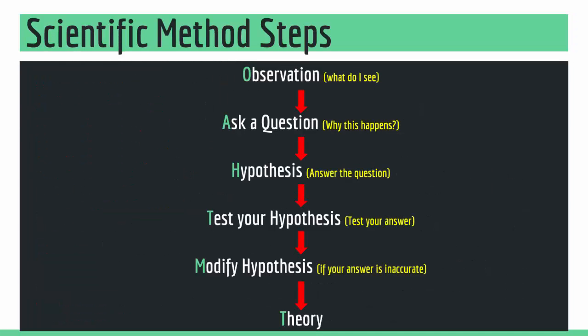These are the steps that go into producing science through scientific method. We make an observation, ask a question, come up with a hypothesis, and test it. We modify our hypothesis if the test results don't match, and when they do match, it becomes a theory, which we then publish. With this, we come to the end of our lecture. See you in the next one.